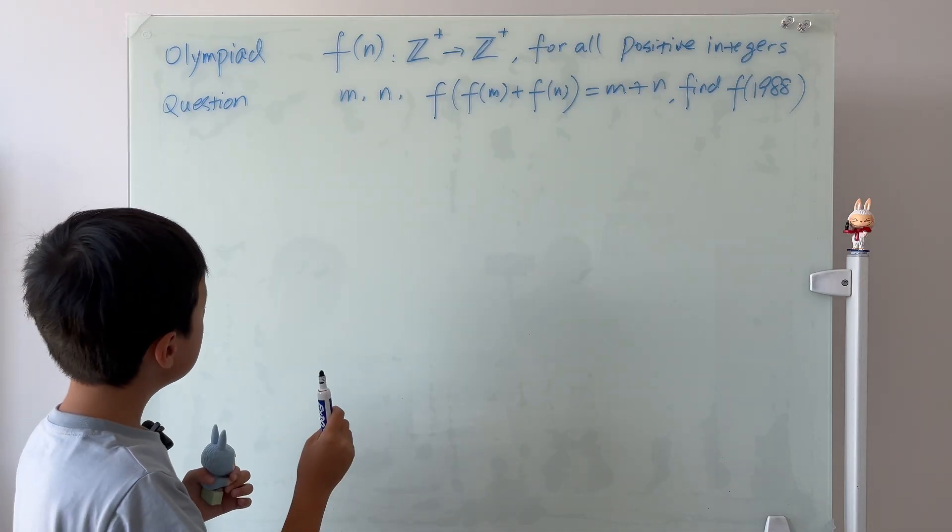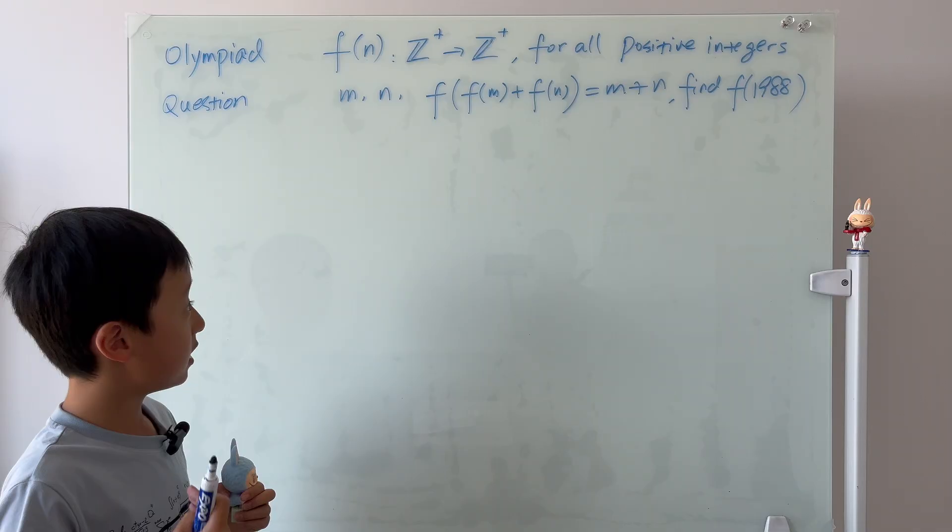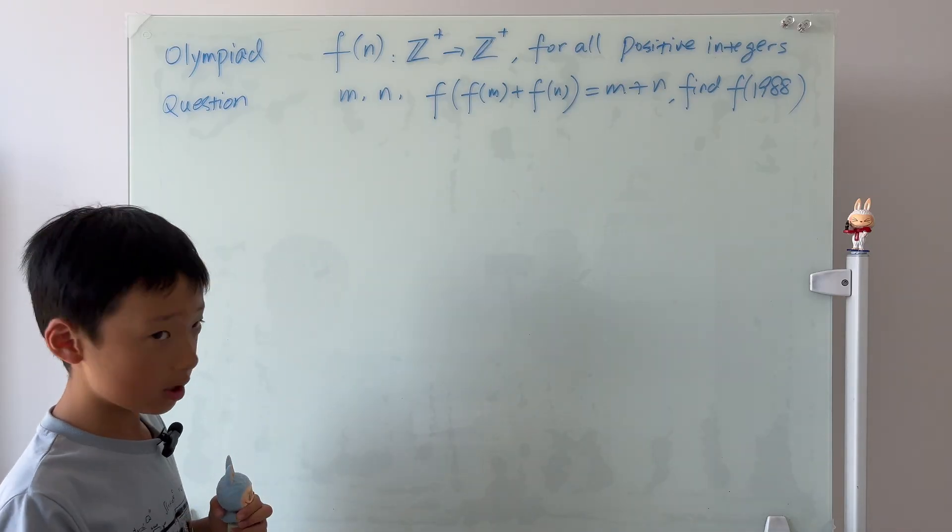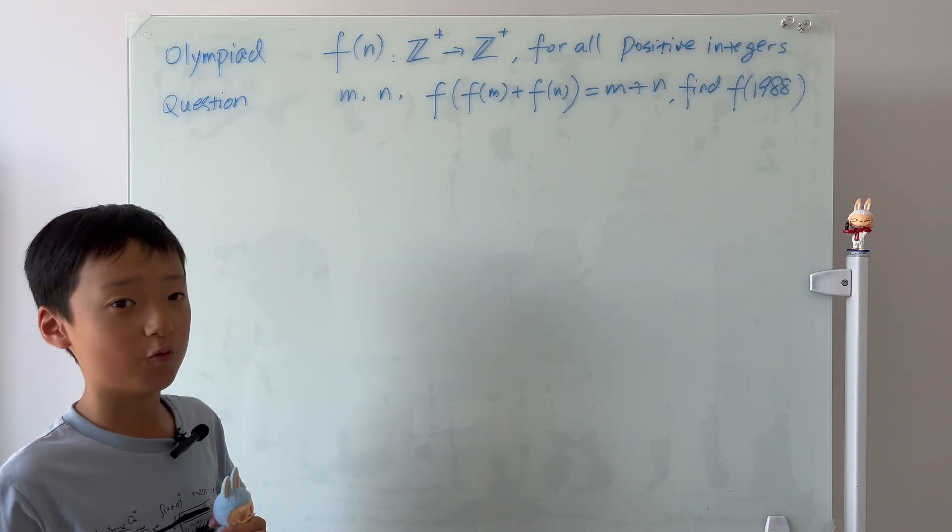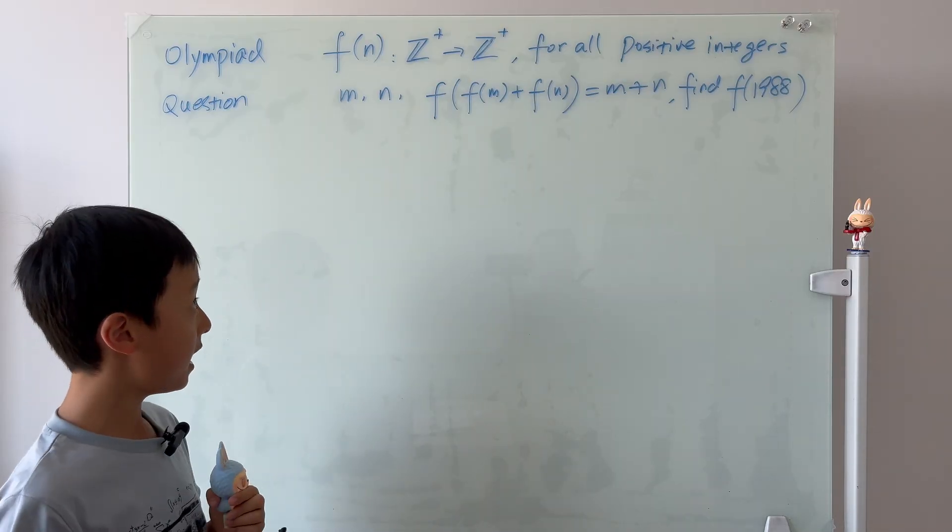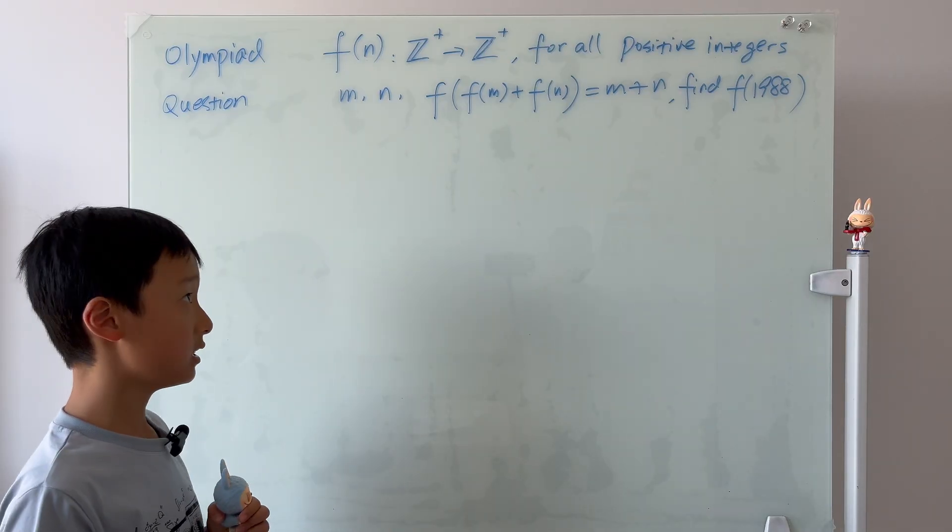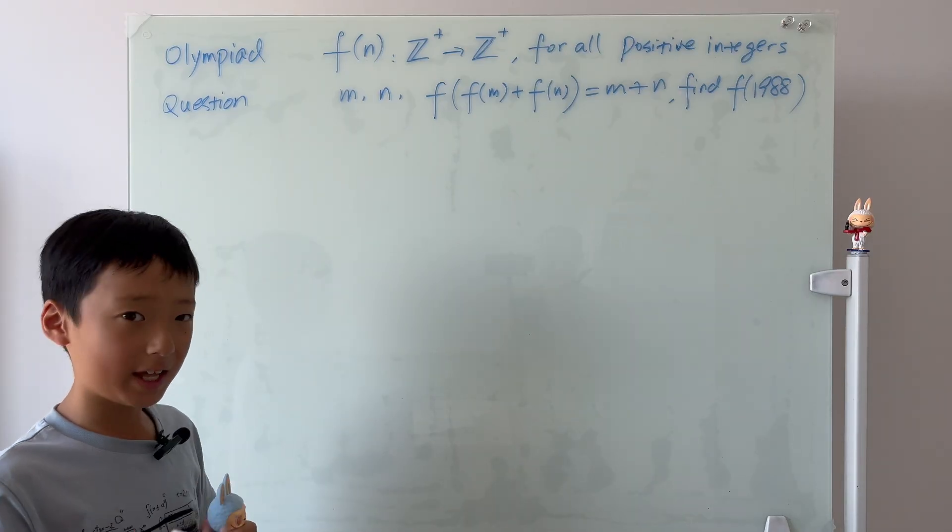f of n goes from positive integers to positive integers. For all positive integers m and n, we have f of f of m plus f of n is equal to m plus n. And the question is asking us to find f of 1988.